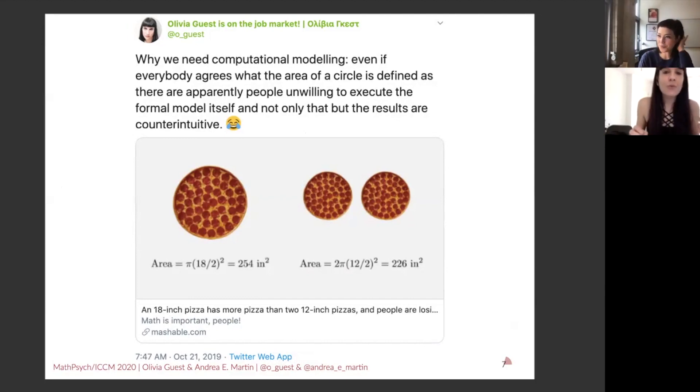So I tweeted why we need computational modeling. Even if somebody agrees what the area of a circle is defined as, there are apparently people unwilling to execute the formal model itself. And not only that, but the results are counterintuitive. So here, what's going on is that there's two pizza order options, one with 18 inches in diameter, and one order with two pizzas with 12 inches in diameter. And I think the average person would assume that the two 12-inch pizzas have more overall food, when in reality, if we run the kind of model that we all sort of agree on that could capture the amount of food, the single pizza with the 18-inch diameter has more food. An 18-inch pizza has more pizza than two 12-inch pizzas, and people are losing their mind. And below that, it says math is important, people.